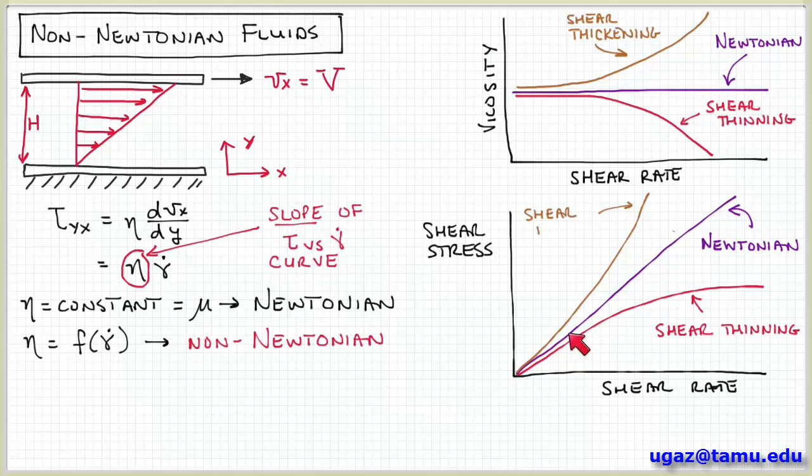Similarly, for a shear thickening fluid, you can see the opposite, right? The slope locally may have one value at low shear rates and then it keeps increasing. If I plot the slope of this curve as a function of shear rate, I would get an increasing function. So that represents shear thickening behavior. So this viscosity represents the slope of the shear stress versus shear rate curve.